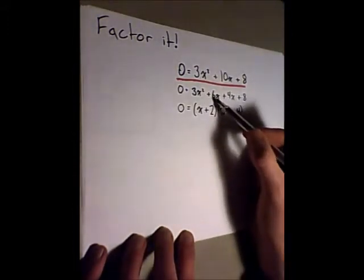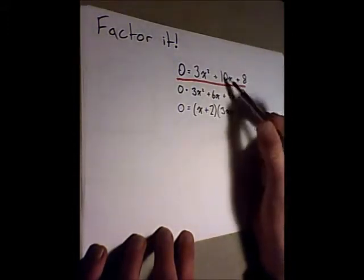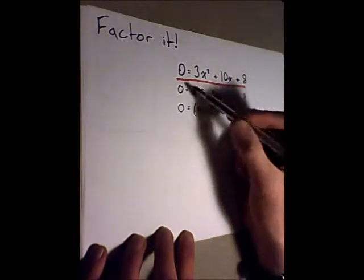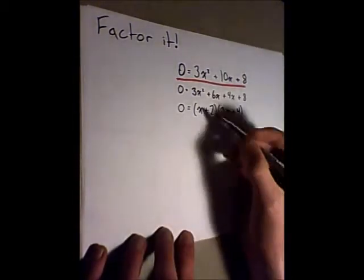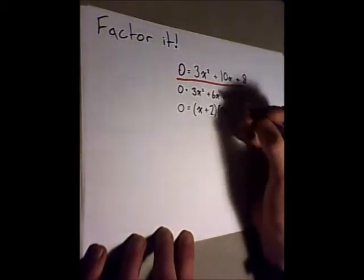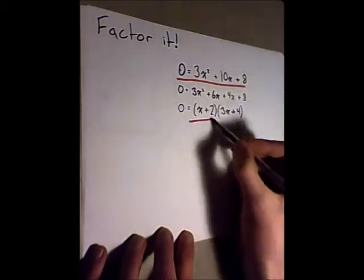And in that case that's 6 and 4. 6 plus 4 is 10. 6 times 4 is 24 or 3 times 8. And then we factor this out, pull out a greatest common factor here, and this is what we're left with.